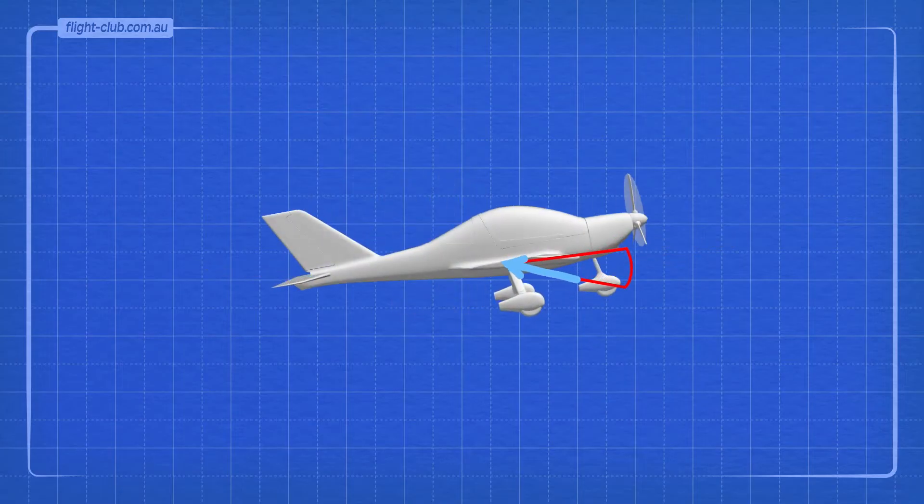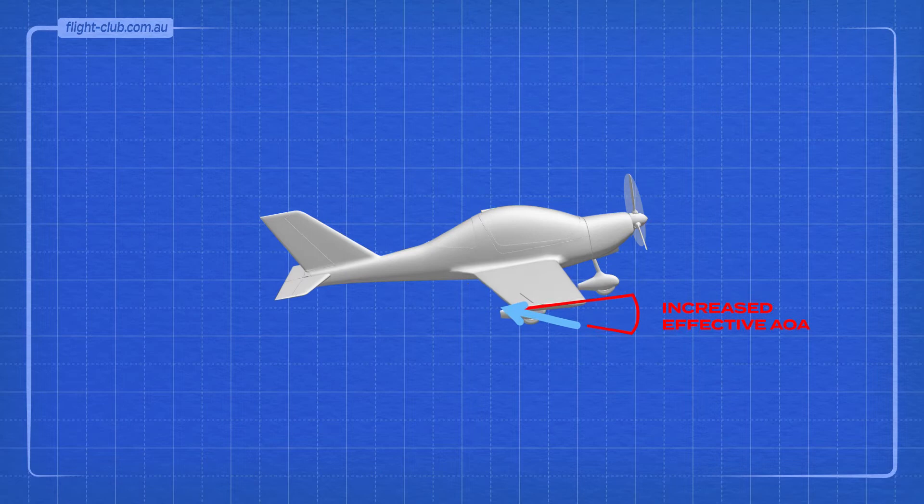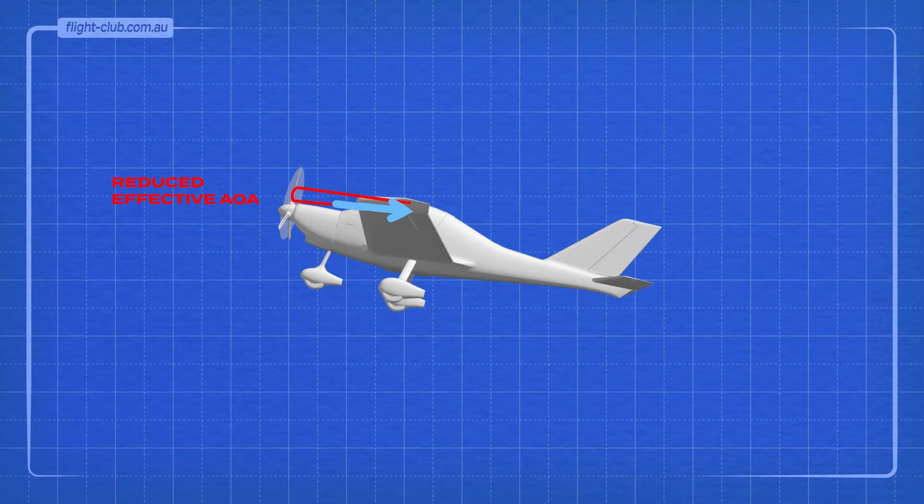The right wing that drops has the relative airflow inclined upwards, increasing its effective angle of attack and increasing drag. As the aeroplane rolls, the left rising wing has a reduced effective angle of attack, and remains less stalled, and has less drag.